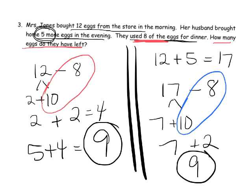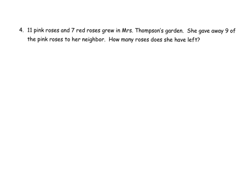And in this last example for this video, we have 11 pink roses and 7 red roses. She gave away 9 of the pink roses, so that means we are going to do 11 minus 9.